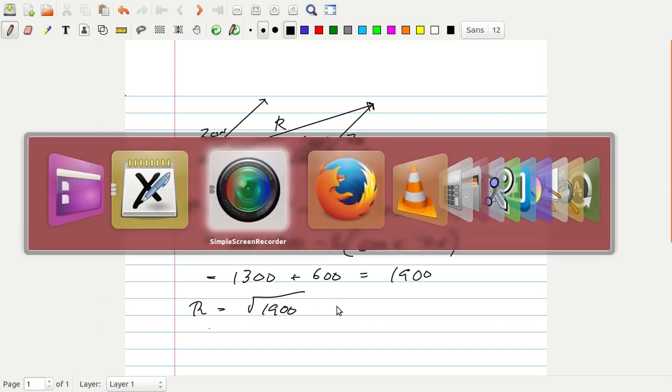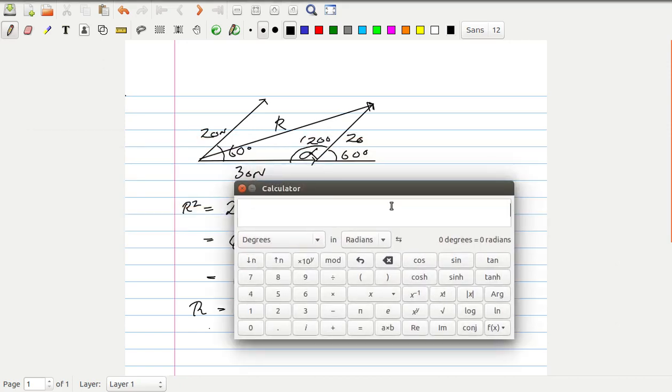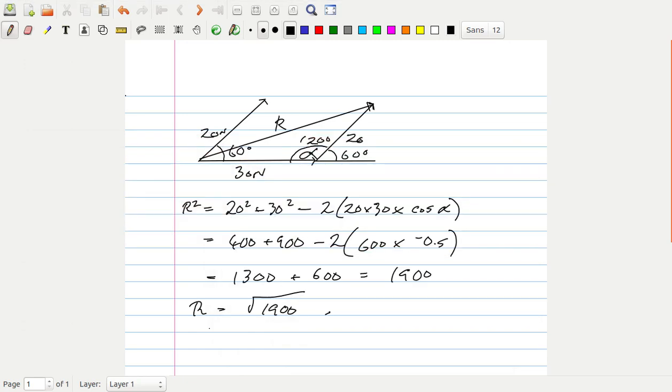And if we just go to the calculator, and work that out, square root of 1,900, 43.589. Okay, so we've got R, and we'll round that up to 43.6.